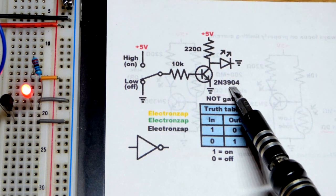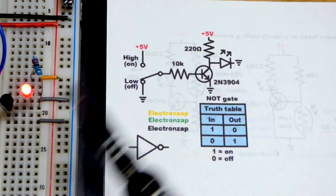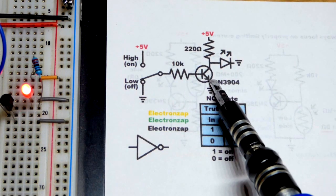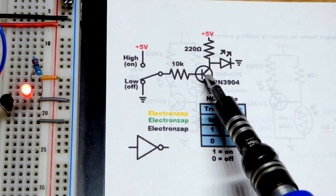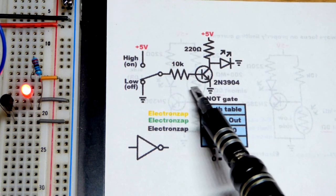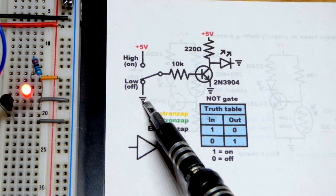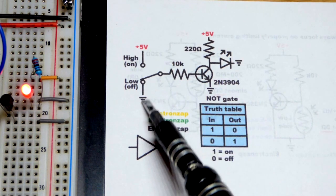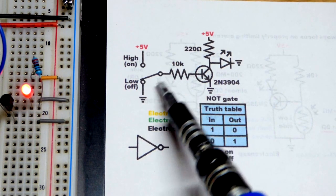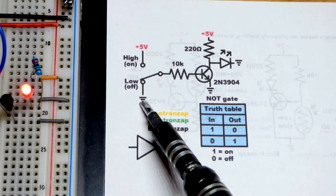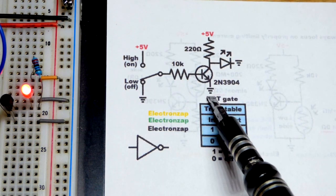We've got the 2N3904 here. Any NPN bipolar junction transistor should work, but the pin layout may be different. When the transistor is off, the best way to turn it off is to connect the base to ground. It doesn't matter if it's through a resistor or not—connecting it to ground shuts it off completely.